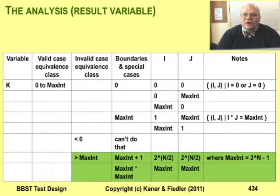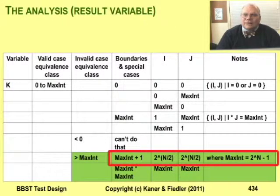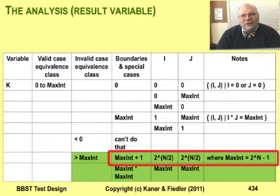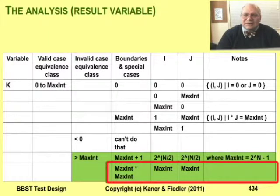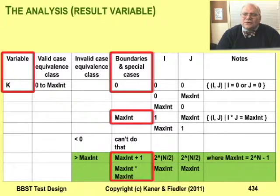The last two values of the chart are easy. For maxint plus 1: if maxint is 2 to the 16th minus 1, then maxint plus 1 is 2 to the 16th. Many values will take you there; on the chart I'm using the square root, 2 to the 8th times 2 to the 8th. As for maxint times maxint, there's only one test — i and j must both be maxint. So now you have tests for all the values of k from our first-draft domain analysis.